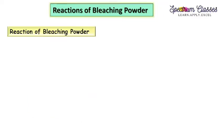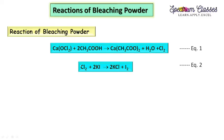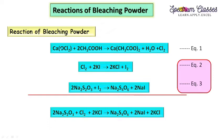Now for the reactions and calculation parts: the chlorine gas produced reacts with the potassium iodide we added, liberating iodine. This liberated iodine then reacts with 2 moles of sodium thiosulphate. So: 1 mole of bleaching powder produces 1 mole of Cl₂, which produces 1 mole of I₂, which reacts with 2 moles of sodium thiosulphate. Ultimately, 1 mole of bleaching powder reacts with 2 moles of sodium thiosulphate — this is the key equation for calculation.